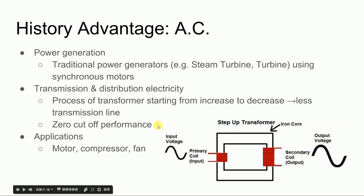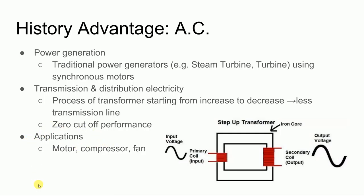Zero cutoff performance is another highlight of AC. When the current is at the zero point, it limits the risk of arc to the smallest. For applications, traditional electrical equipment is typically powered from AC — for example, motors, compressors, and fans.